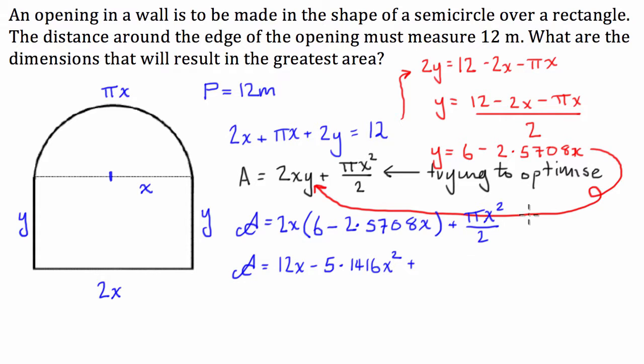and then we're going to plus, now pi divided by 2, 1.5708 x squared.